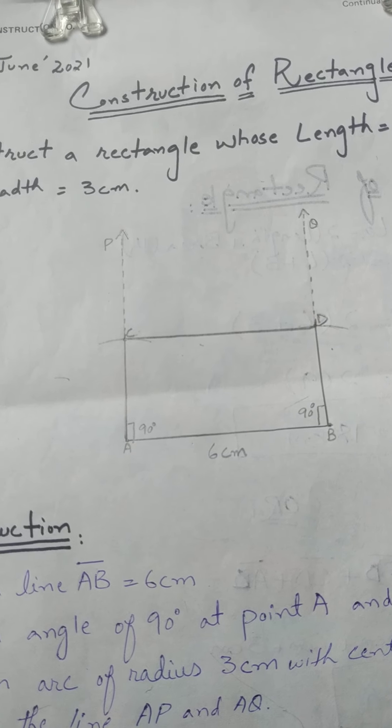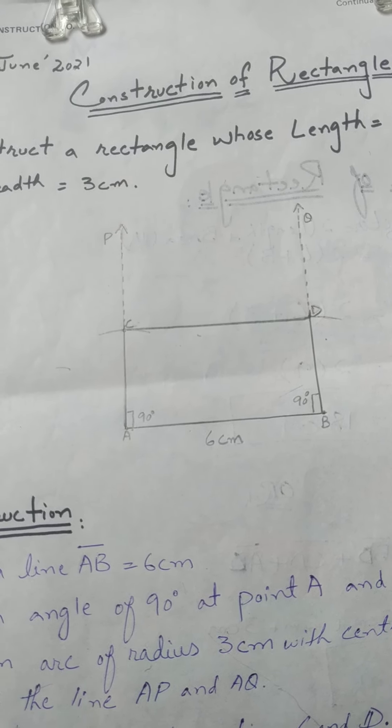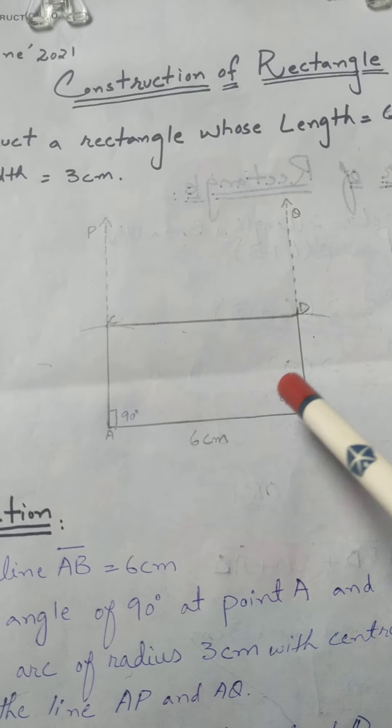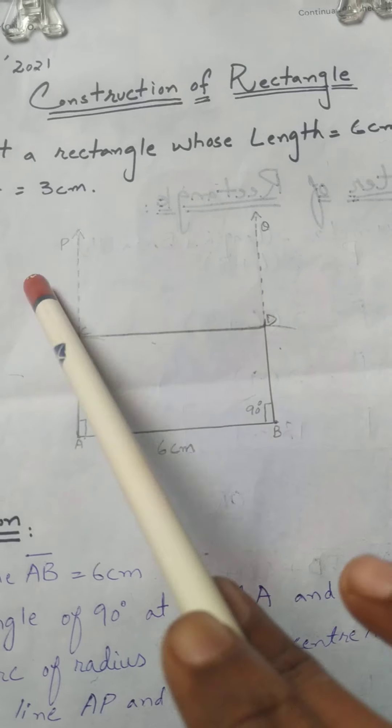A square is a figure whose all sides are equal, whereas a rectangle is a figure whose two opposite sides are equal. That is why the length and breadth are given.